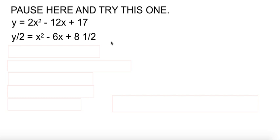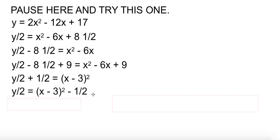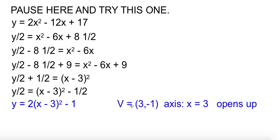Divide by the 2 first. Get the 8 and a half out of the way. Negative 6 divided by 2 is negative 3. Squared is 9. So we add 9. The right is a square that we can clean up. The left we can do some arithmetic on. Subtract the half over. Multiply by the 2. So the vertex is 3, negative 1. The axis is x equals 3. And since the 2 here is positive, it opens up.